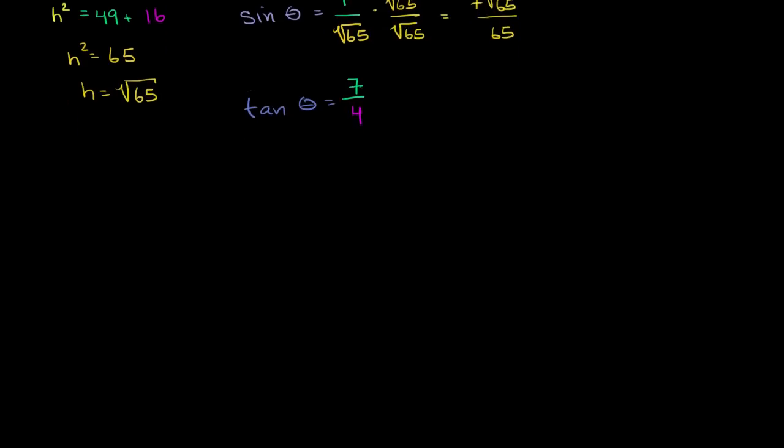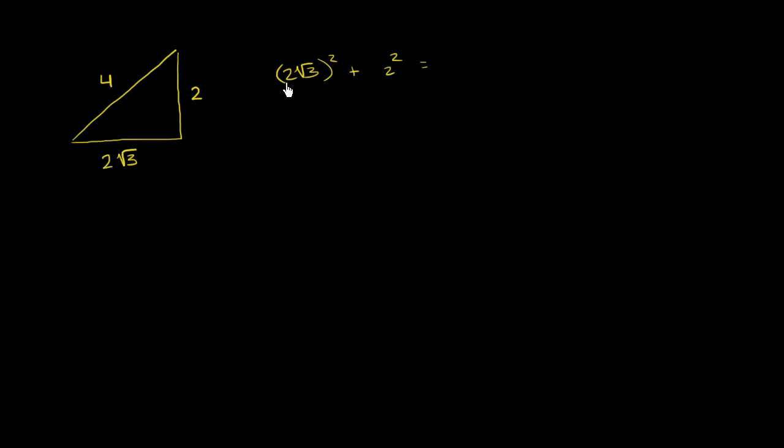Let's do another one — a bit more concrete. Let me draw another right triangle. Let's say the hypotenuse has length 4, this side over here has length 2, and this length over here is 2 times the square root of 3. We can verify this works: 2√3 squared plus 2 squared equals 4 times 3 plus 4, which equals 12 plus 4, which is 16 — and 16 is indeed 4 squared. So it satisfies the Pythagorean theorem.